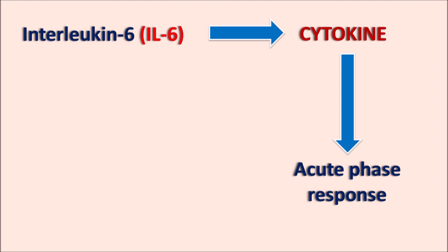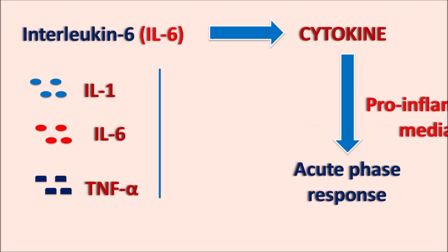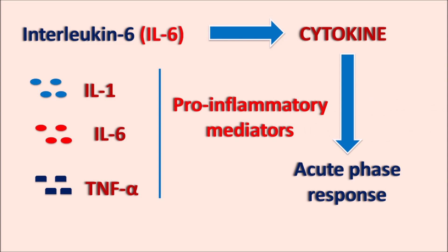Three important cytokines are released which can develop the inflammatory cascade. The first one is IL-1, interleukin-1, which is responsible for the development of hyperthermia — that is, fever. The second one is IL-6, which plays a key role in the inflammatory cascade. The third one is TNF-alpha, tumor necrosis factor alpha. These three cytokines play a crucial role in the immune response and they are pro-inflammatory mediators.